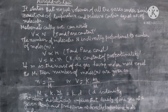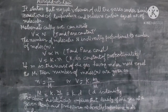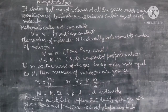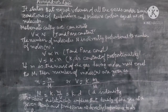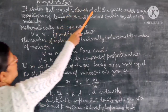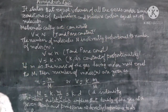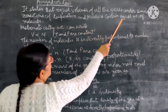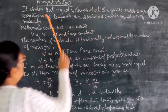All these lines meet the temperature axis on extrapolation at zero Kelvin, as shown in the figure. Now let's study Avogadro's law. This law describes the volume-amount relationship of gases at constant temperature and pressure. It was given by Avogadro in 1811. It states that equal volumes of all gases under similar conditions of temperature and pressure contain equal number of molecules.